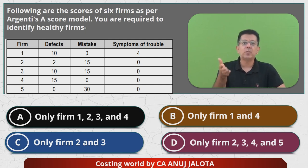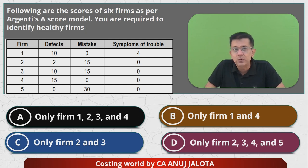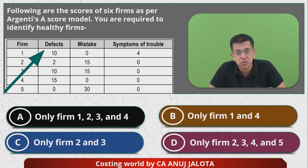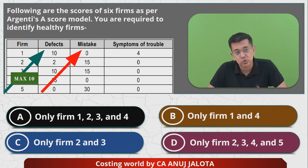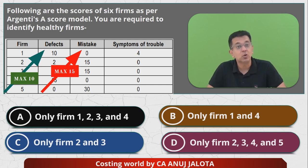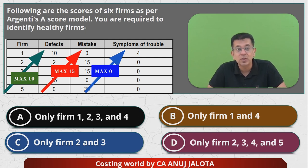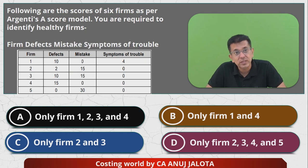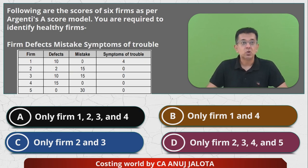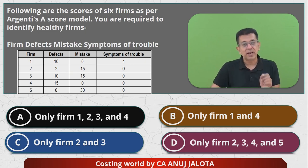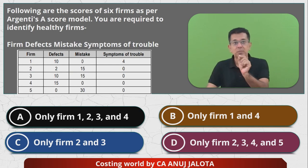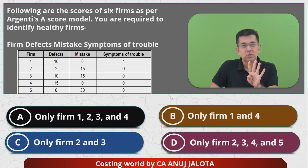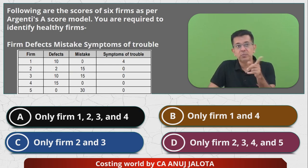To recap: maximum defect score can be 10, maximum mistake score can be 15 — not more than that — and symptoms of trouble score can be maximum zero. Now analyzing Form 1: symptoms of trouble score is 4, but it should be maximum zero, so Form 1 is out.